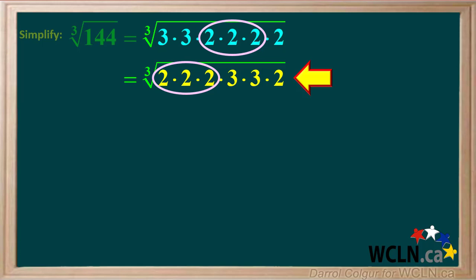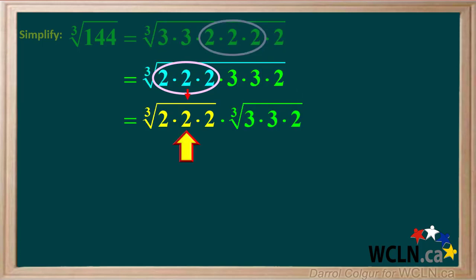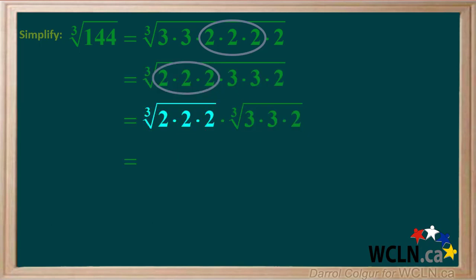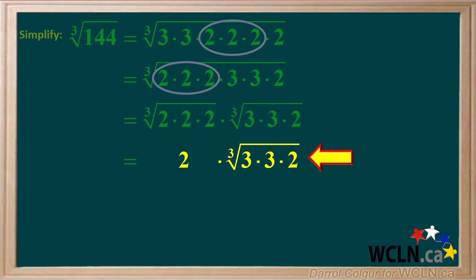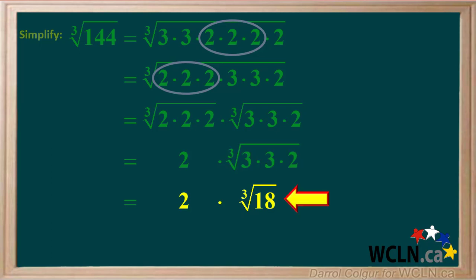Now we'll break it up into two cube roots: the cube root of 2 times 2 times 2, times the cube root of 3 times 3 times 2. The cube root of 2 times 2 times 2 is the same as the cube root of 2 cubed, or just 2. The cube root of 3 times 3 times 2 cannot be simplified, so we just copy it down. So we're left with 2 times the cube root of 3 times 3 times 2. 3 times 3 times 2 is the same as 9 times 2, or 18. So the cube root of 3 times 3 times 2 can be written as the cube root of 18.